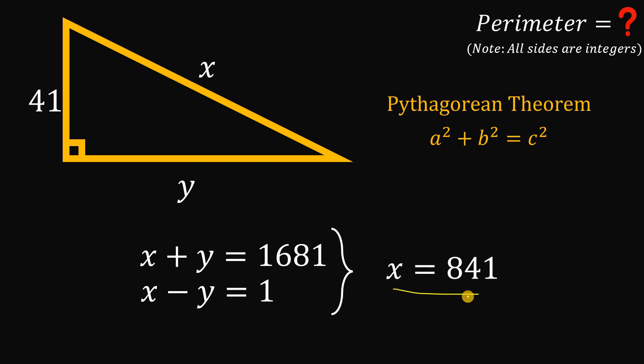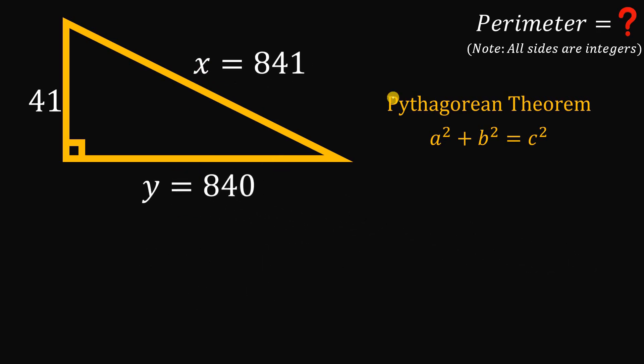How about the value of y? If we have x - y equals 1, or 841 - y equals 1, then y must be 840. So we have the value of x which is 841 and y which equals 840.